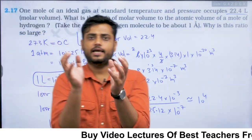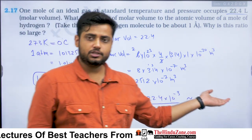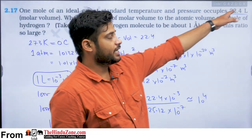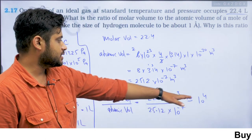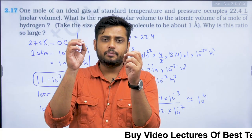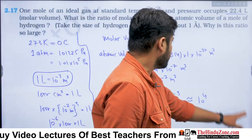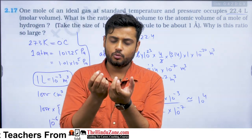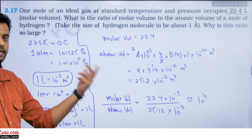This means even if you pack all hydrogen atoms together, the gas occupies 10,000 times more volume than the atoms themselves. This is because in the gas phase, the average separation between two atoms (molecules) is very large. That is why the ratio is so large — the molar volume is much larger than the total atomic volume.